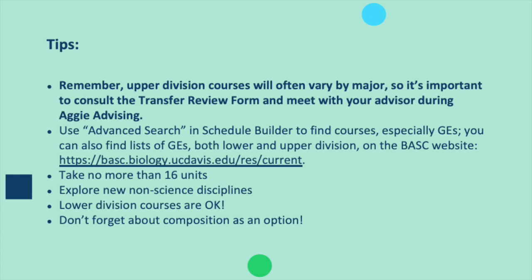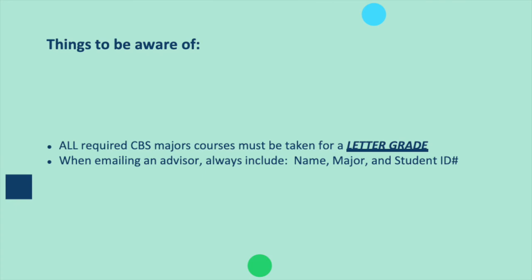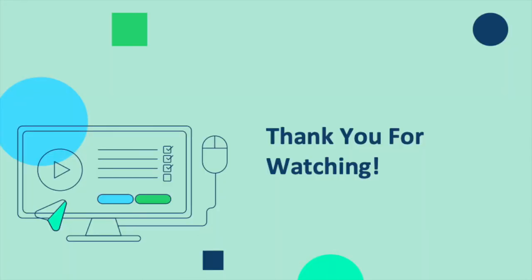Tips for your first year at UC Davis: upper division courses often vary by major, so consult the transfer review form and meet with your advisor during Aggie Advising. Use advanced search in Schedule Builder to find courses, especially GEs — lists of GEs both lower and upper division are also on the BASC website. Take no more than 16 units, as this is a quarter system and it's fast-paced. Explore new non-science disciplines, lower division courses are okay, and don't forget about composition. All required CVS major courses must be taken for a letter grade. When emailing an advisor, always include your name, major, and student ID. Good luck on your first quarter at UC Davis!